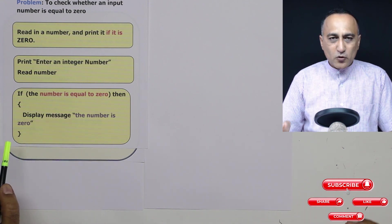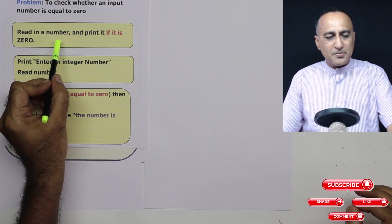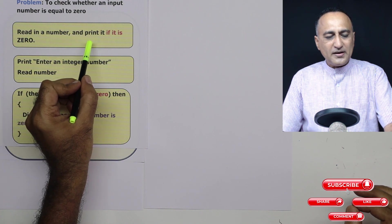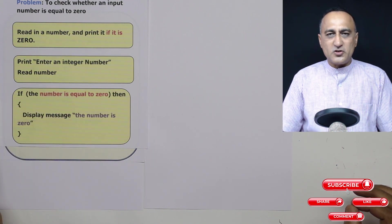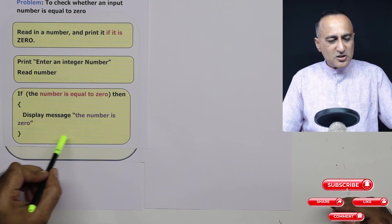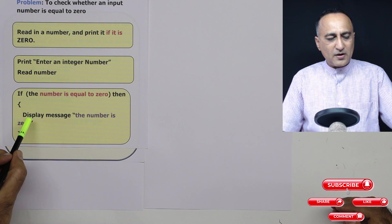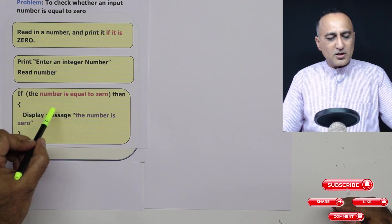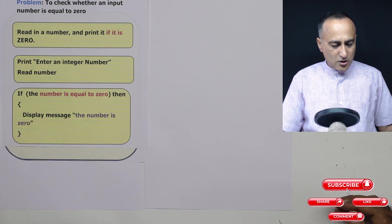So in this program what I am doing is I am reading in a number and I am trying to print only if it is equal to zero. Otherwise I am not doing anything else. So here using a decision making statement, I was able to check in English whether the input number is equal to zero or not.